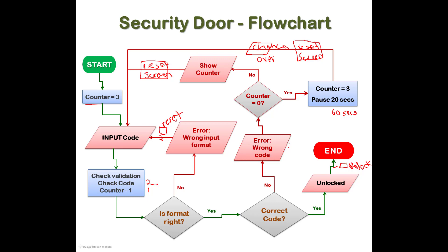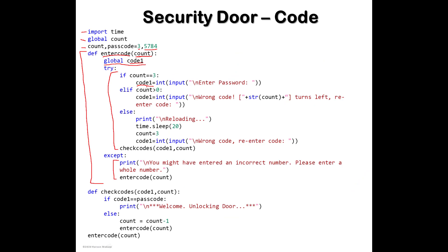Here we show the difference: 'code_one' is set to integer input with the message 'wrong code — enter the right password.' At the start it just says 'input the code', but after an incorrect entry it tells you 'wrong code, you've entered the wrong code.' This also demonstrates mixing integer values with string values — you convert the integer to a string to show, for example, 'number two turns left.'